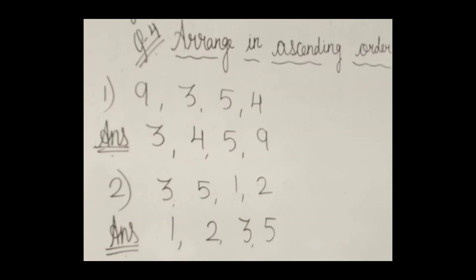Arrange in ascending order. 9, 3, 5, 4. Ascending means moving from smaller number to the greater number. So, first of all we will write 3, 4, 5, 9.